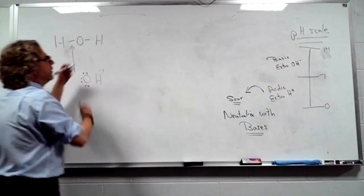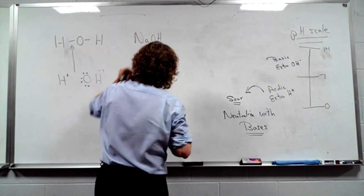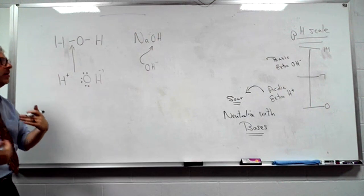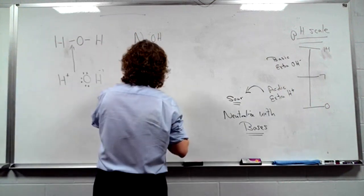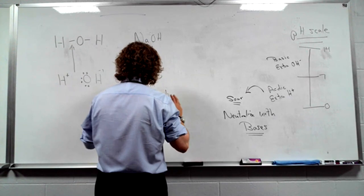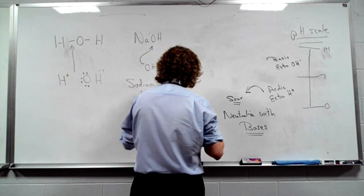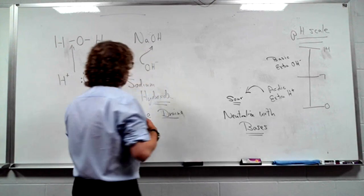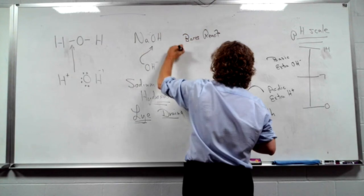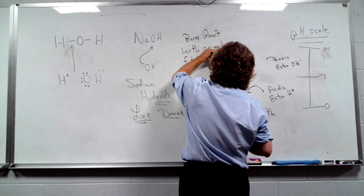What is a base? The other side of water. NaOH — if you see an OH minus, you're a base. If you see an H first, you're an acid. Sodium hydroxide — this was called lye. This is the major ingredient in Drano to clean your pipes, because bases react with animal fat to make soap.